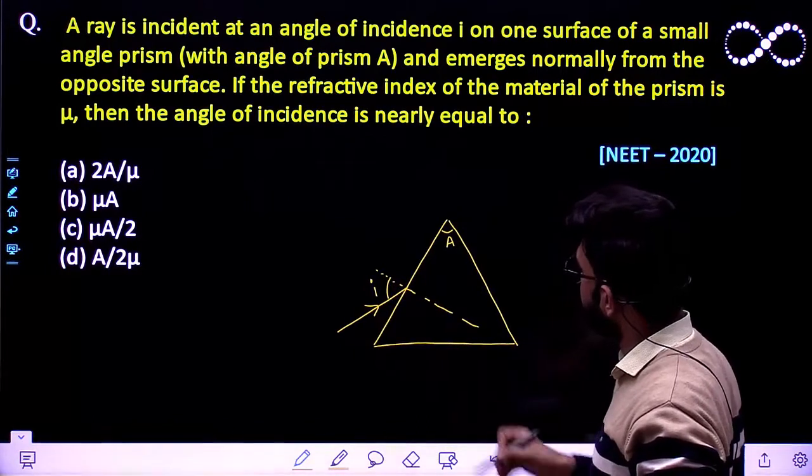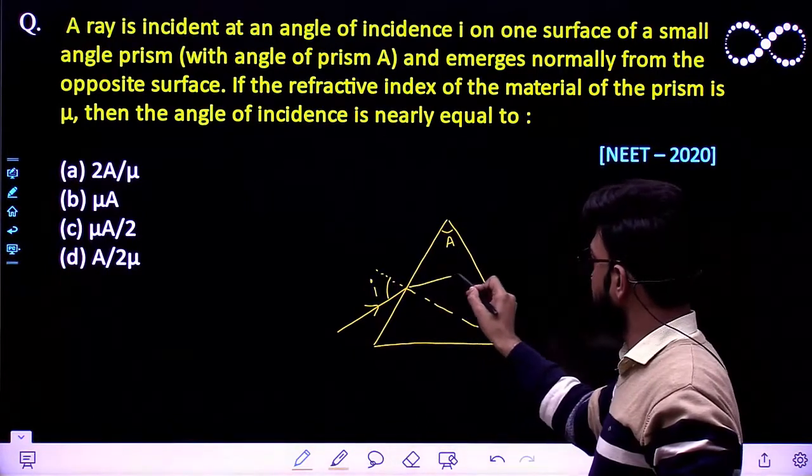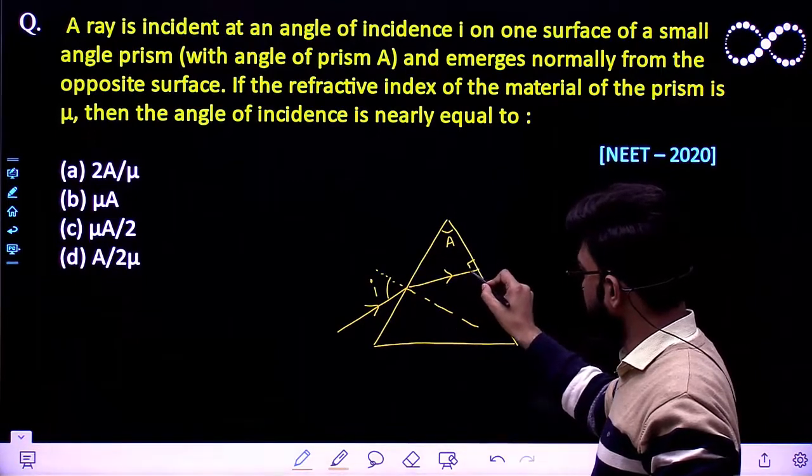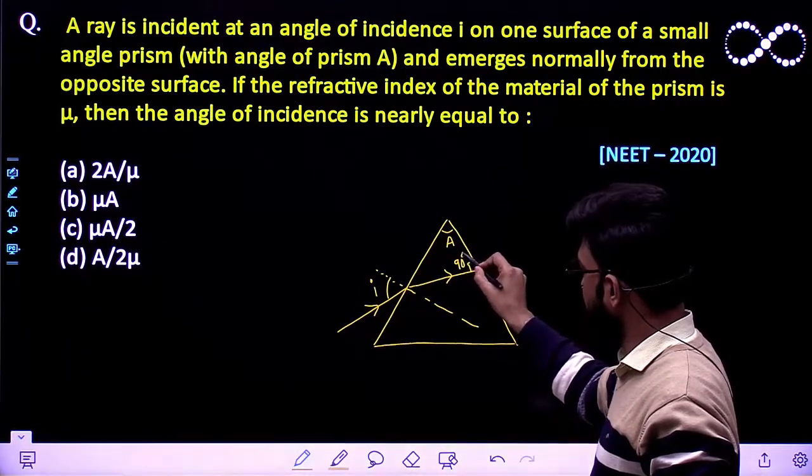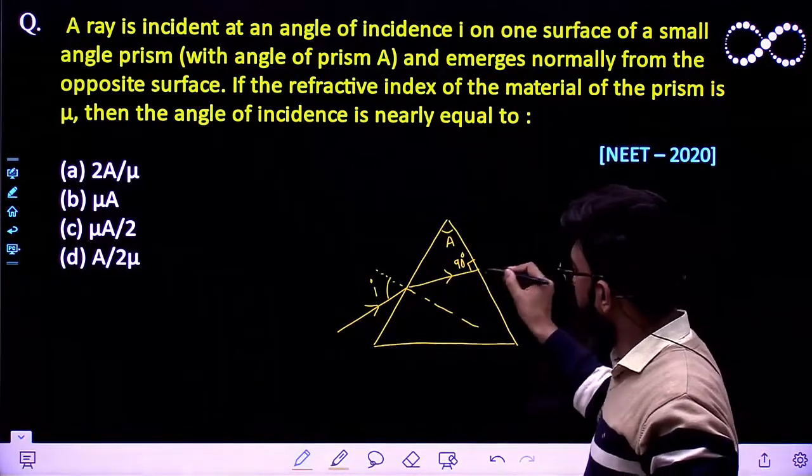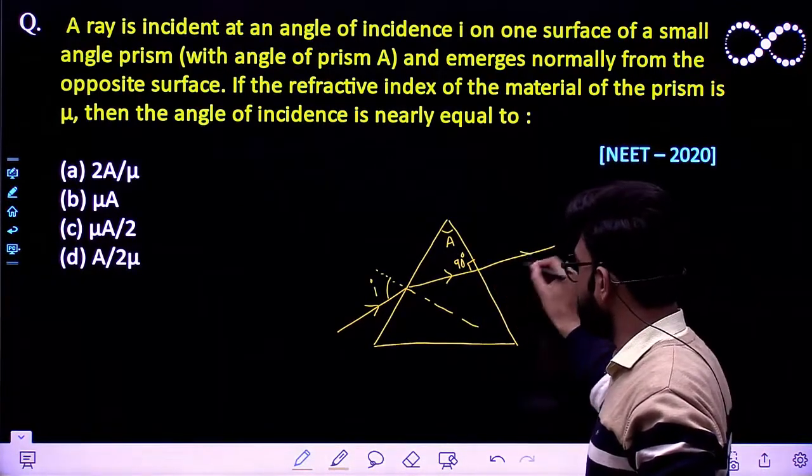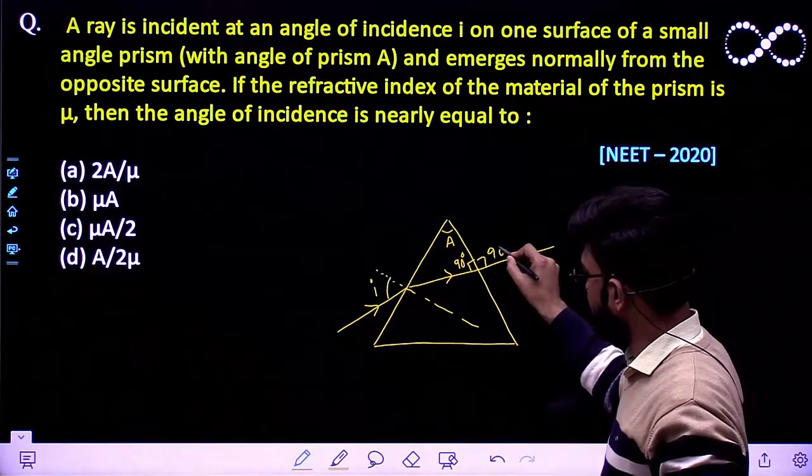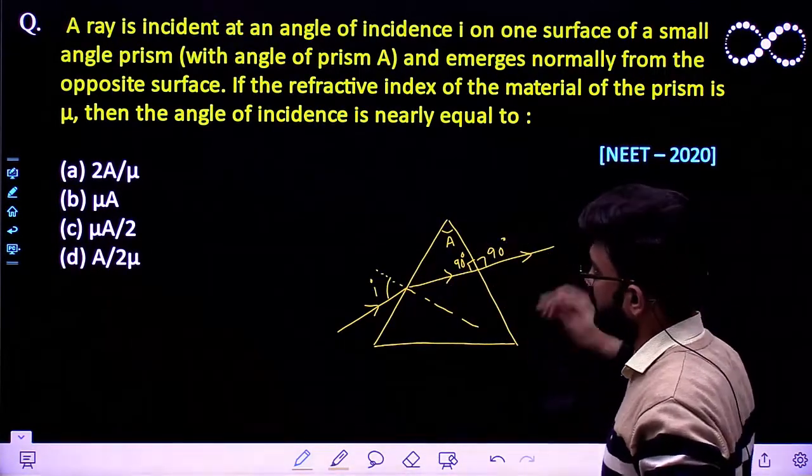After this it goes and hits the other surface perpendicularly. So it makes an angle of 90 degrees on the other surface and emerges normally from the opposite surface. So that means it will go just like this, hitting normally to this other surface and keep on moving.